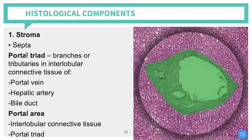Your portal vein has a bigger lumen and a thin wall. Your hepatic artery has a thicker wall compared to the portal vein but a smaller diameter. Your bile duct is lined by simple cuboidal epithelium — if you see simple cuboidal cells, that is your bile duct. So the components of the portal triad are: portal vein, hepatic artery, and bile duct.